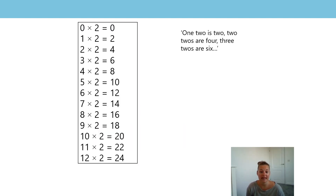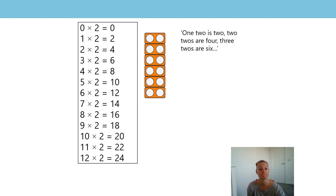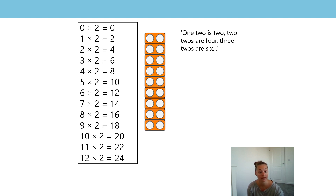Here is the multiplication chart — we're going to say it together. One two is two. Two twos are four. Three twos are six. Four twos are eight. Five twos are ten. Six twos are twelve. Seven twos are fourteen. Eight twos are sixteen. Nine twos are eighteen. Keep going — ten twos are twenty. Eleven twos are twenty-two. And twelve twos are twenty-four. Fabulous, well done.